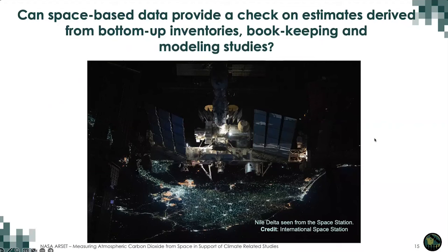Now that we have seen these large differences in bottom-up emission estimates — and I will stress that even though large, bottom-up estimates are a very important way of generating emission information, especially since they are the only way to get scope two and scope three estimates — clearly there are large differences between them. This brings us to the question: can space-based emission estimates, such as those derived from OCO-3, be used to give us a check on the emission estimates derived from bottom-up inventories?